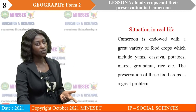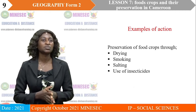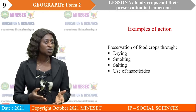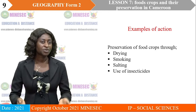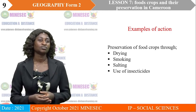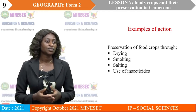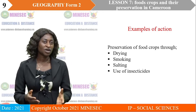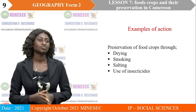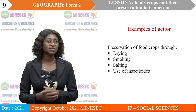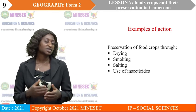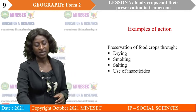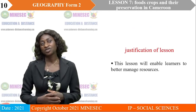Before we go to the justification of our lesson, let's look at examples of action. What should we do in order to preserve these crops? We have to use insecticides so as to preserve these food crops. And this takes us to the justification of our lesson.